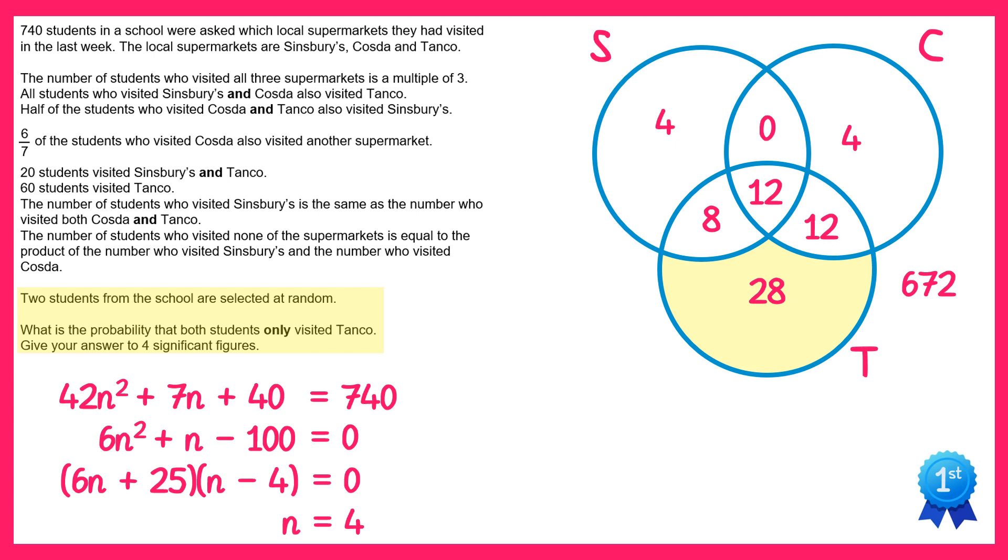This means the probability the first one visited only Tanko is 28 out of the total number of students which is 740, and for the second student they'll only be 27 now and a total of 739. We multiply these probabilities, and it says round your answer to four significant figures, and you should get a decimal of 0.001382.